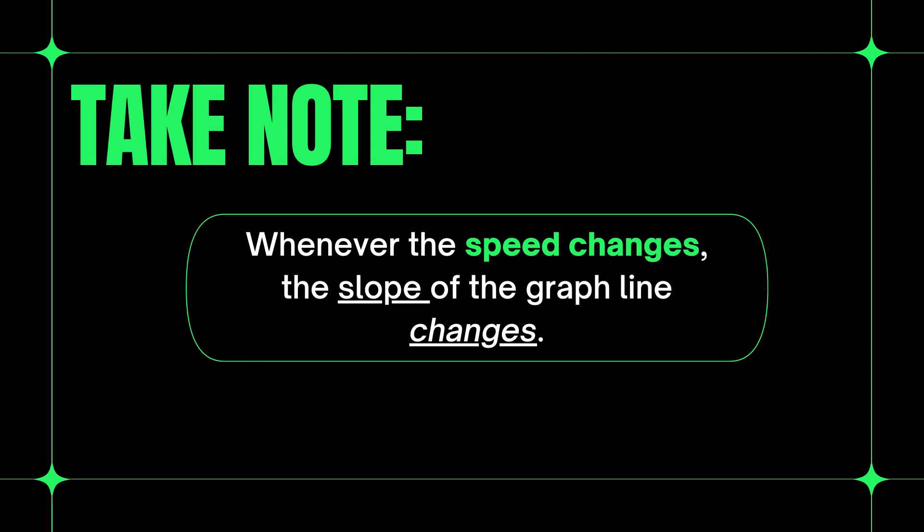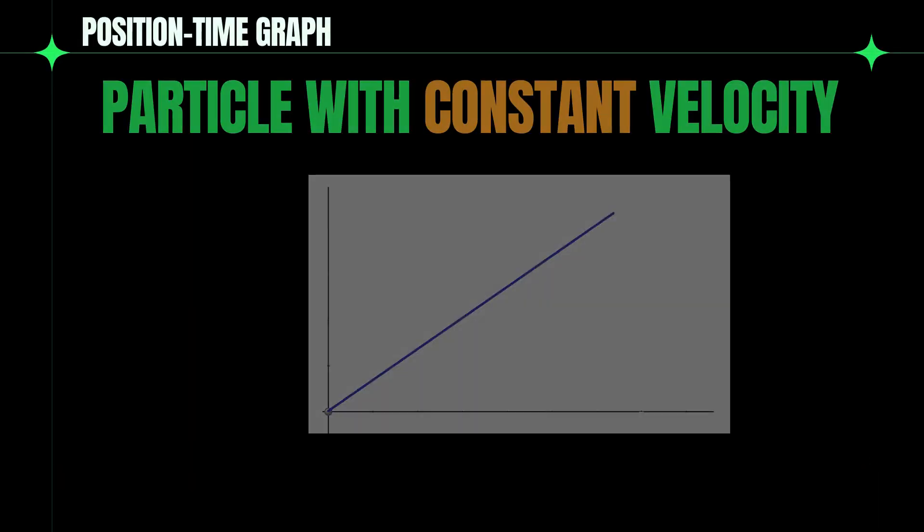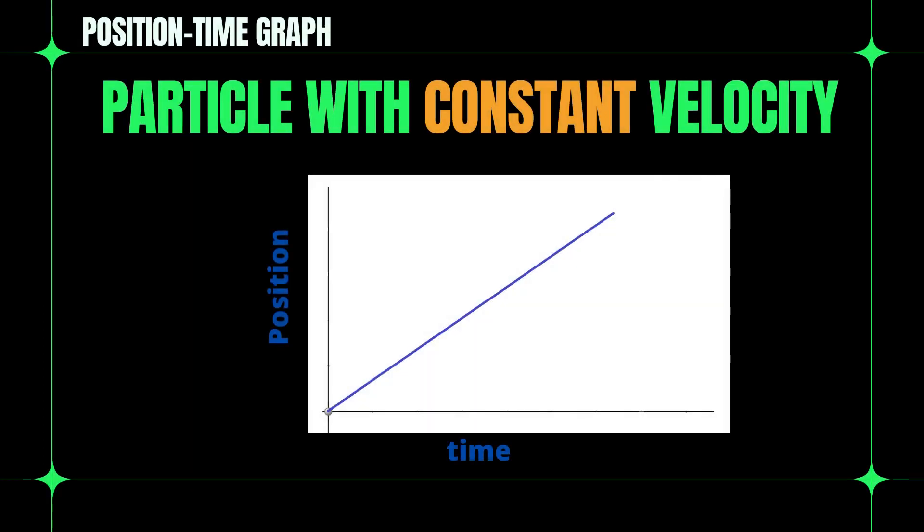Please remember that whenever the speed changes, the slope of the graph also changes. This is the position time graph of a particle with constant velocity. Any moving particle having a constant velocity exhibits a straight line.